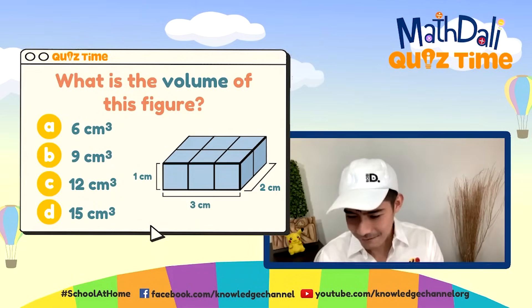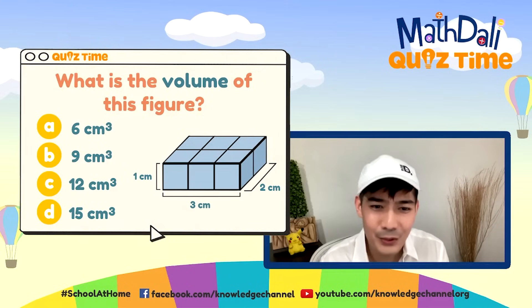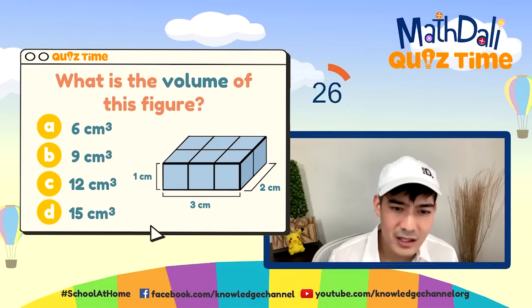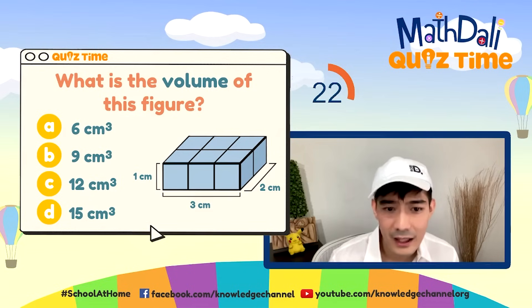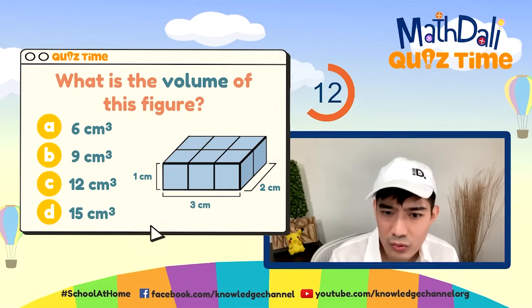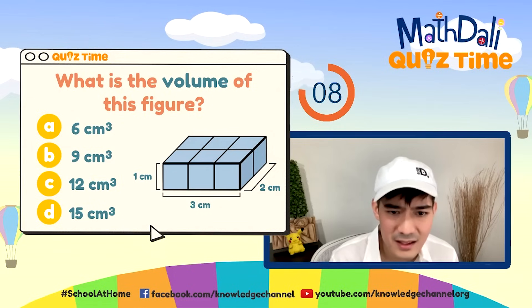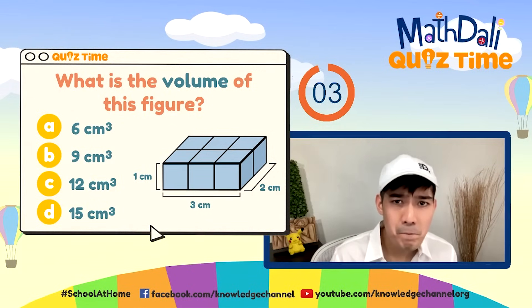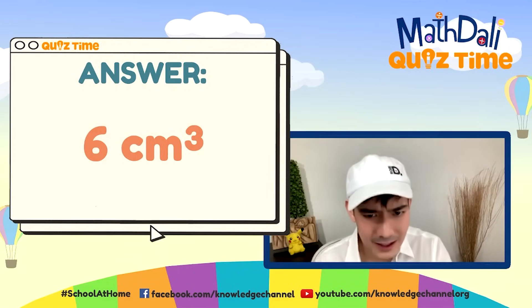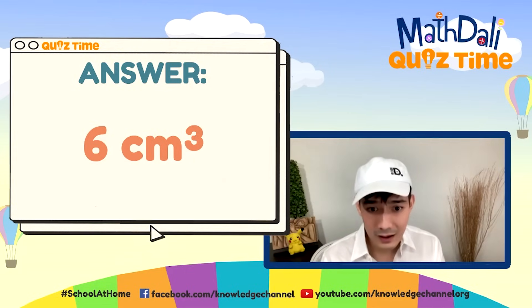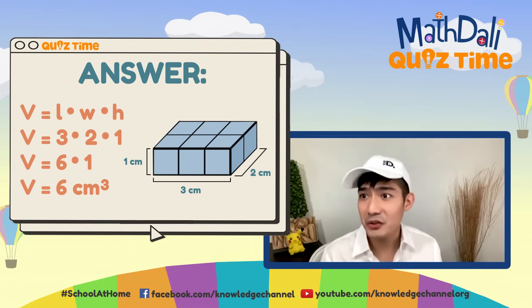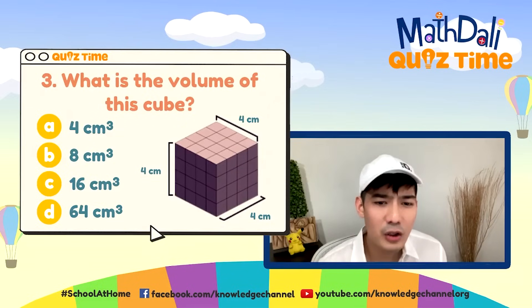Question number 2. Let's use length times width times height. May dimension: 2 times 3 times 1. What is this? Ang tamang sagot po mga kaibigan ay Letter A — it's 6 cubic centimeters. O pag binilang natin, kitang-kita na may 6 cubes na bumubuo sa rectangular prism na ito. Or by using the formula: length times width times height — 3 times 2 times 1 is equal to 6 cubic centimeters.